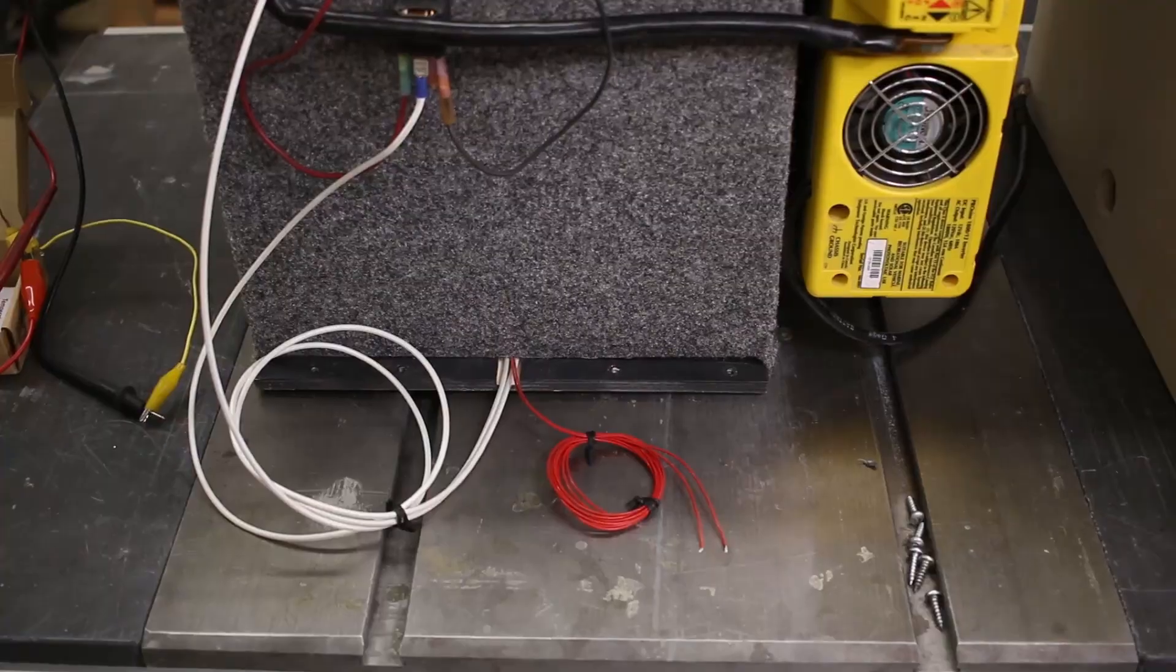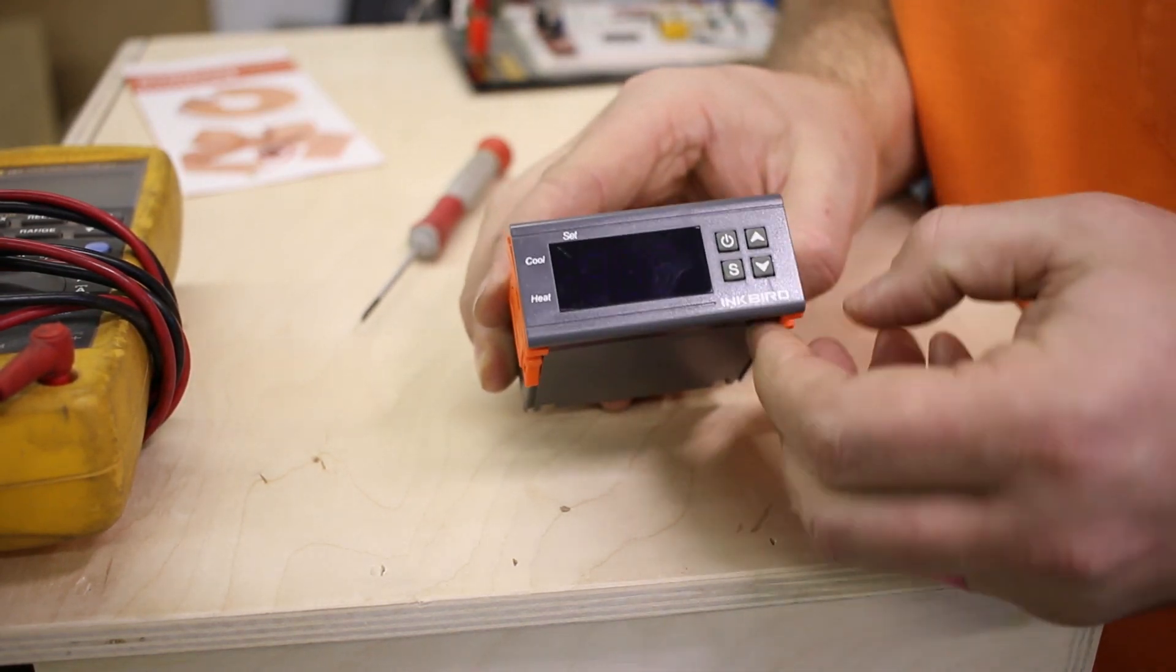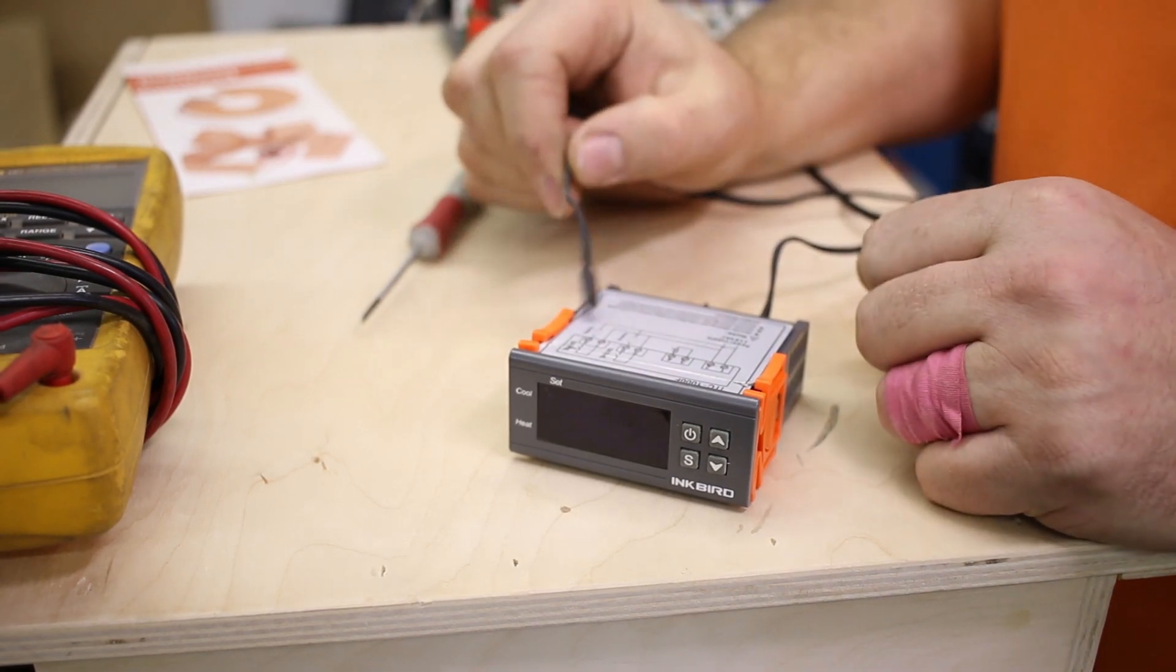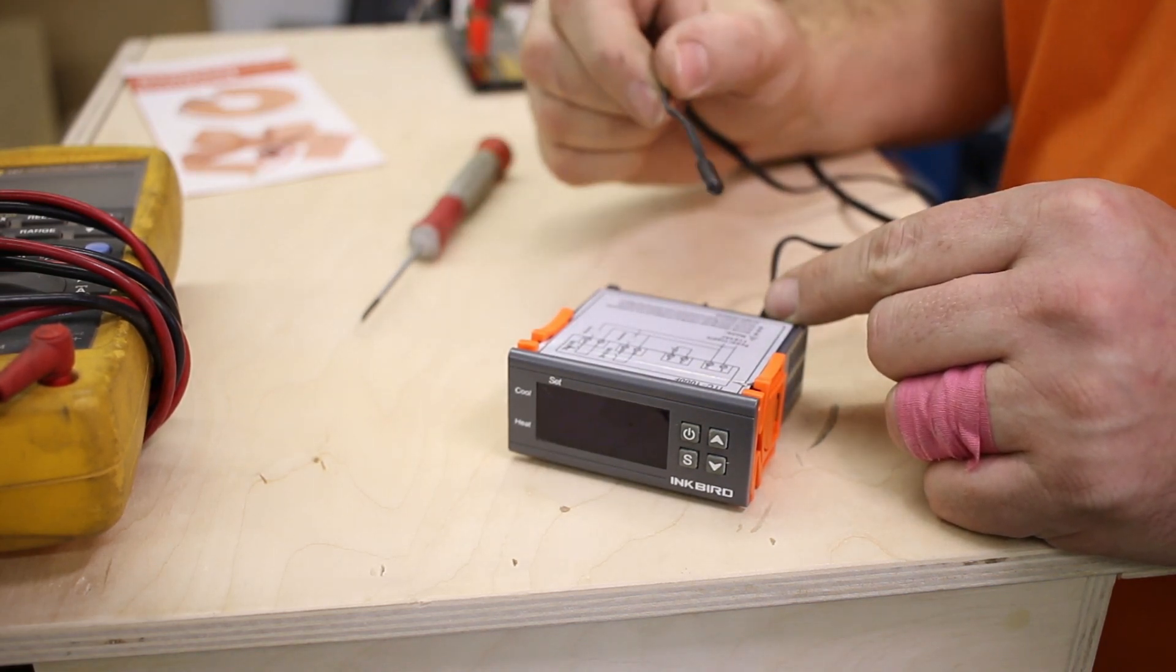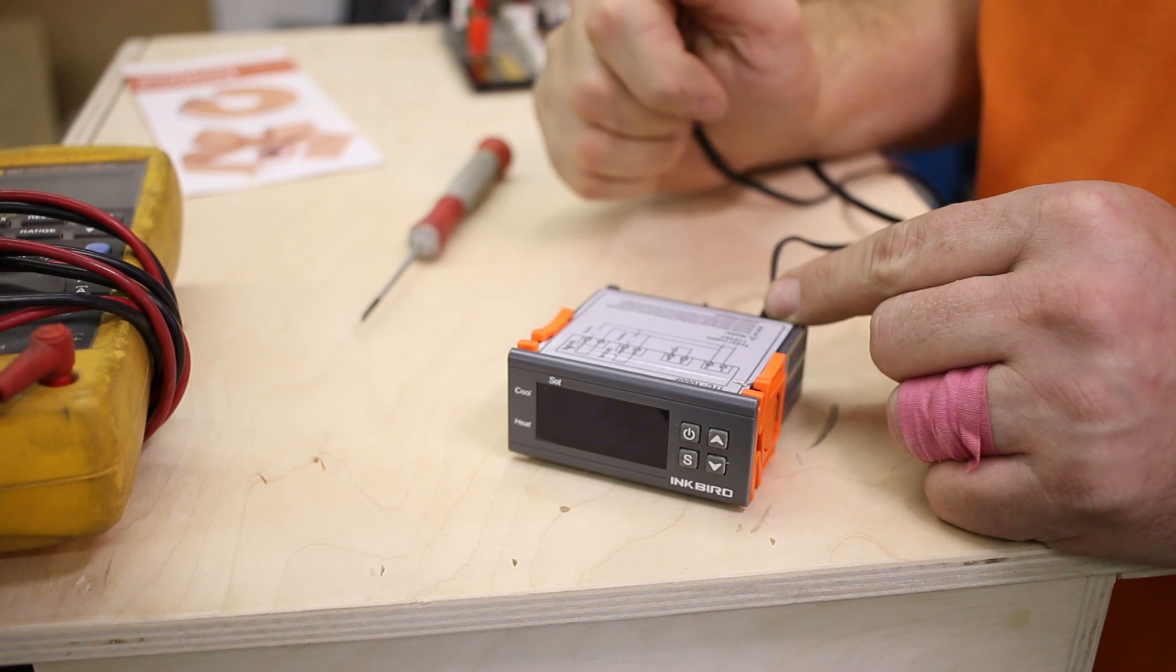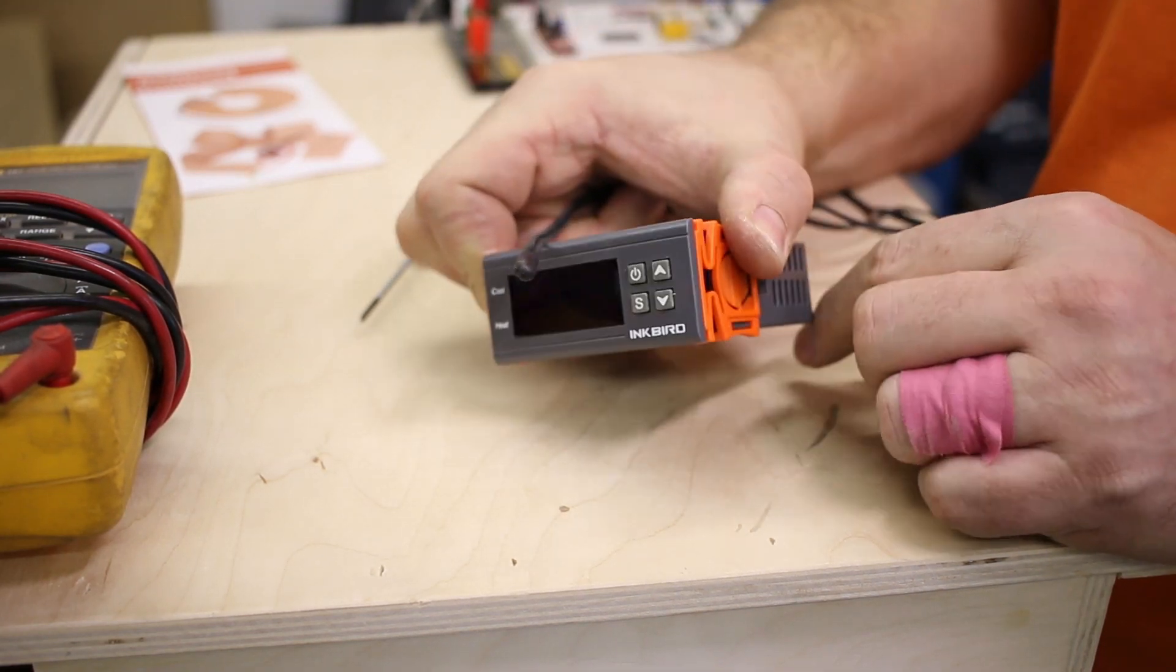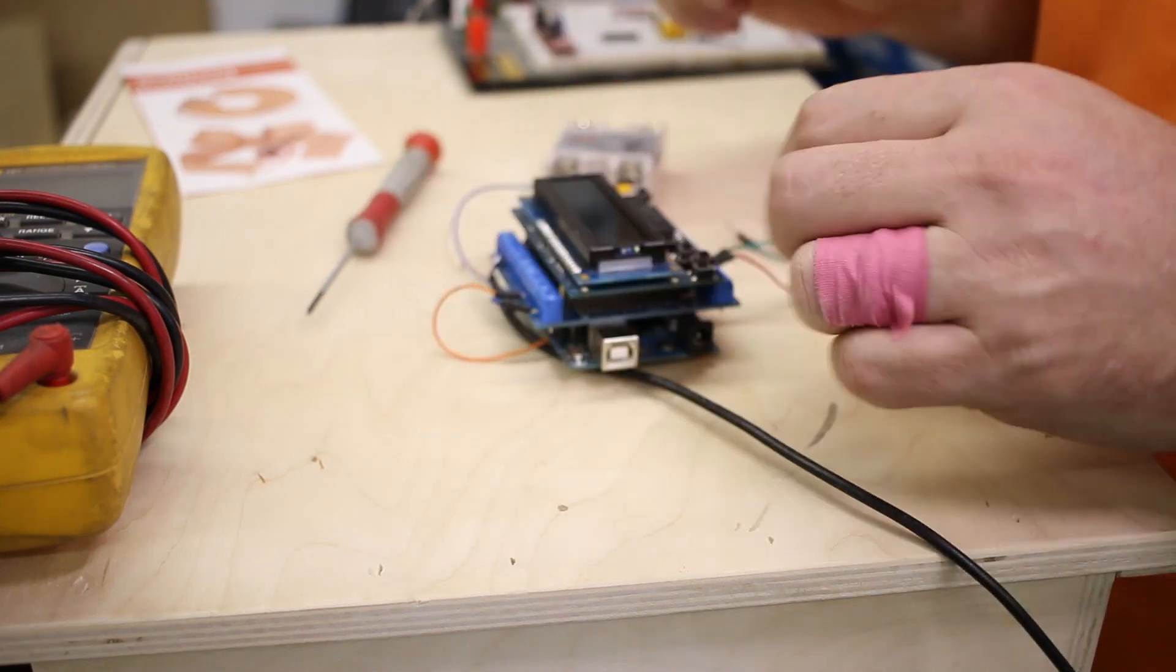Okay, to control the temperature I got one of these Inkbird thermostat control temperature control deals off of Amazon. I've had it laying around for a while for other sous vide projects. I just tried it out quickly. It runs off 110 so that wouldn't work permanently. But running off of 110 and switching the 12 volt heater, it was terrible. It would overshoot by 10 degrees and then fall below 10 degrees below the set point. It's just not accurate enough because it doesn't have a PID loop in it. It's just a basic dumb thermostat.